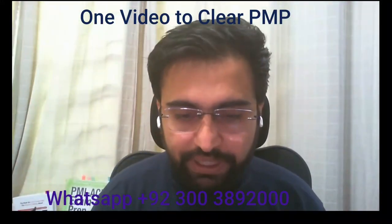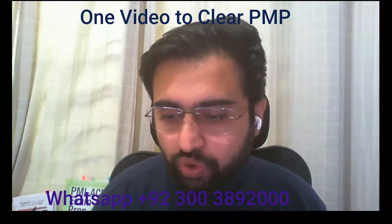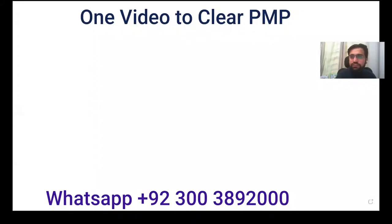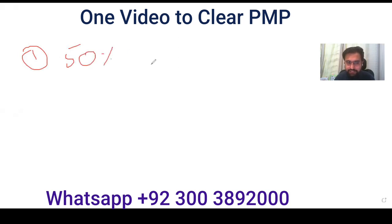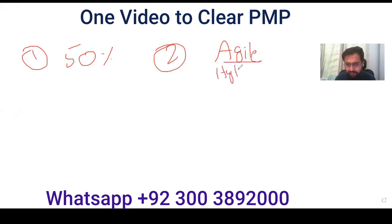In order to understand the PMP, we need to know a few things. The PMP covers two major areas. The first area is predictive, which is 50% of the exam. The second area is agile — you can also call it hybrid — which is also 50% of the exam.